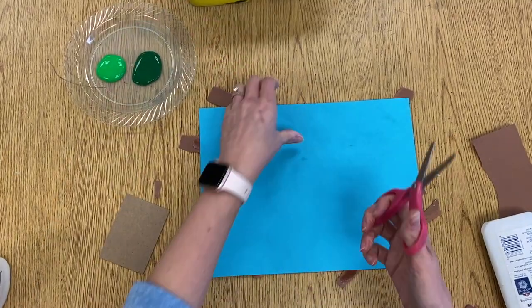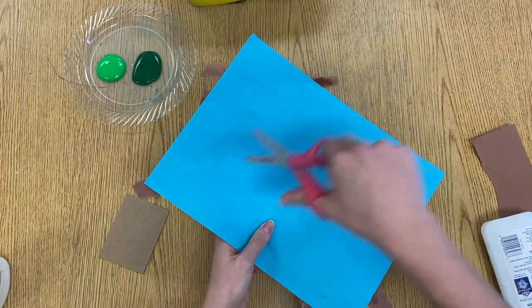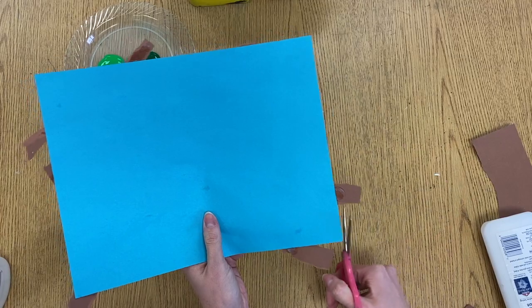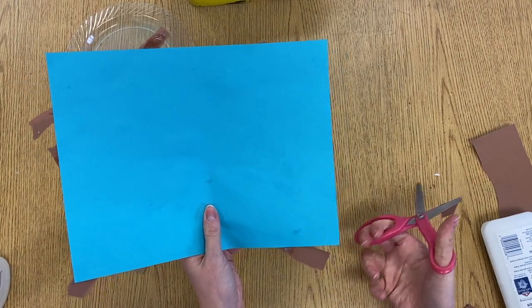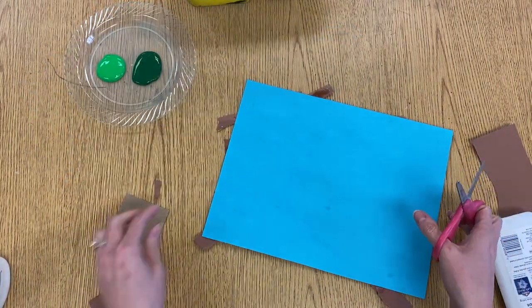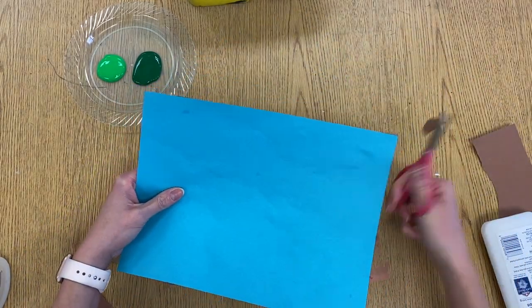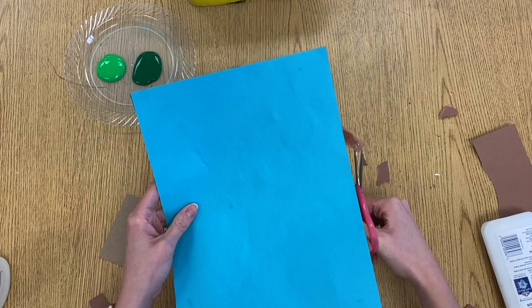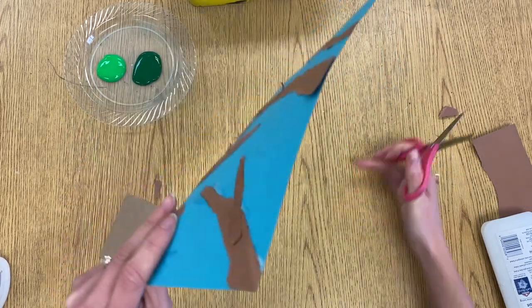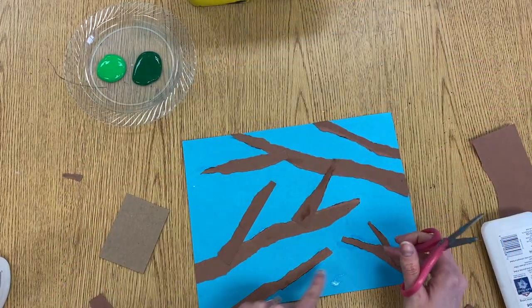All right. So while your paper is flipped over, you can go ahead and trim off those extra branches that are hanging off the sides. So just trim off where you see the blue paper. And then when you flip it back over, you have nice clean edges.